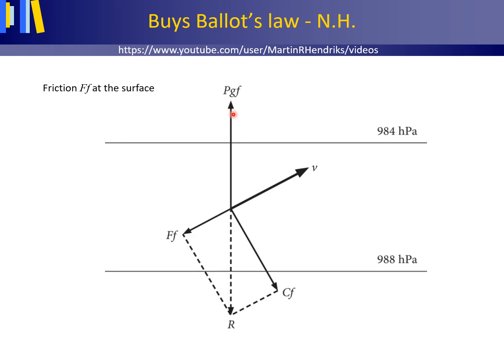As the figure shows, for this equilibrium situation to exist, the air movement — the wind — needs to be at an angle with the isobars. This is stated in Buys-Ballot's law for the Northern Hemisphere: when you stand with your back to the wind, low air pressure is in front of you on your left, and high pressure is behind you on your right.